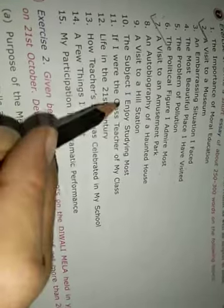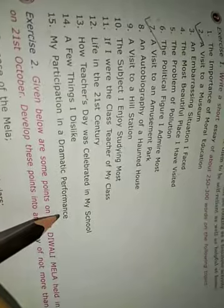Now moving on to the exercises — the rest of the samples you should read on your own as homework. The essay topics given include: visit to a museum, an embarrassing situation I faced, the most beautiful place I have visited, the problem of pollution, the political figure I admire the most, a visit to an amusement park, an autobiography of a haunted house, the subject I enjoy studying the most, visit to a hill station, if I were the class teacher, how Teacher's Day was celebrated in my school, a few things I dislike, my participation in a dramatic performance, and life in the 21st century. I am giving you three essays as homework. We will continue with grammar lessons next time.